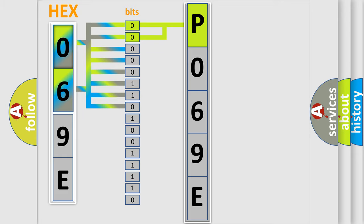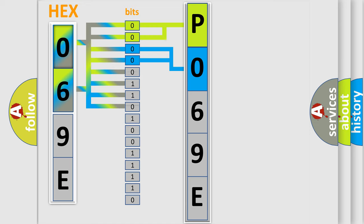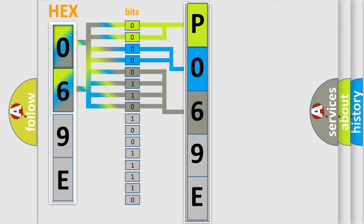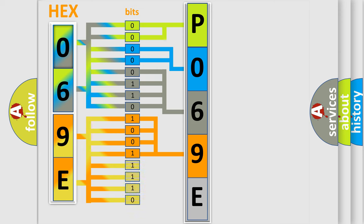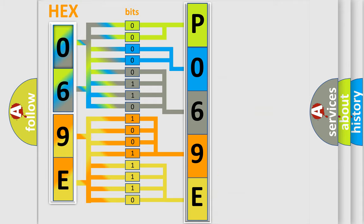The next two bits determine the second character. The last bits of the first byte define the third character of the code. The second byte is composed of a combination of eight bits. The first four bits determine the fourth character of the code, and the combination of the last four bits defines the fifth character. A single byte conceals 256 possible combinations.